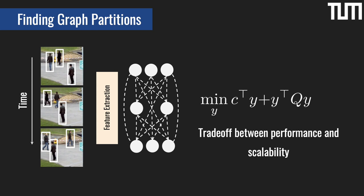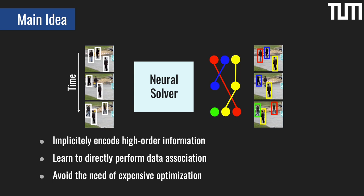Overall, we have a trade-off between performance and optimization complexity. We propose to tackle this trade-off with a novel neural solver that can implicitly encode high-order graph information and directly predict graph partitions. This way, we avoid the need for expensive discrete optimization without sacrificing performance.